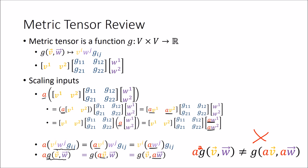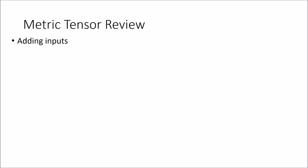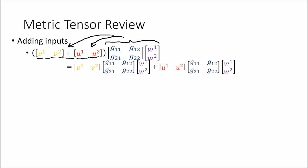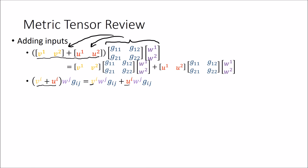That's the scaling rule for the metric tensor. Now let's consider addition. If we have two vectors added together as the left-side input of the metric tensor, we just distribute to both vectors, ending up with two terms added together. In summation notation, if we have two vectors added on the left, we distribute to each of them. More abstractly, if the metric tensor has two vectors added as the first input, we can write this as the sum of two functions where the first inputs are each of those vectors and the second input is the same for both.